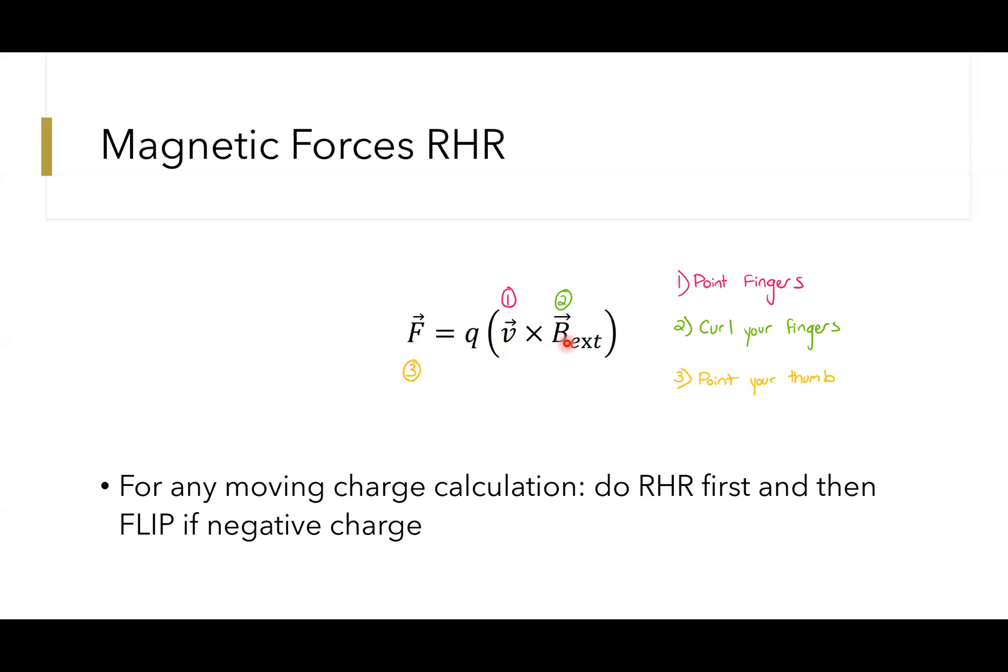Once you do that, your thumb is pointing a certain direction. Guess what? That's your direction of force, specifically the magnetic force in this case. This is very similar to the right-hand rule you apply with the torque equation. Why? Because they're both cross product laws.